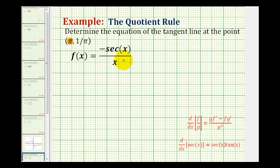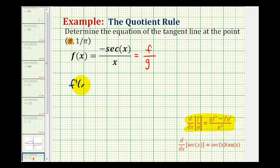Notice how we have a quotient of two differentiable functions, so we'll have to apply the quotient rule given here in red for reference. We'll let the function in the numerator equal f, and we'll let the function in the denominator equal g. So to determine f prime of x, let's start with the denominator. Notice how the denominator is just g squared, or the denominator squared, so we'll have x squared in the denominator. Then our numerator is g times f prime minus f times g prime.